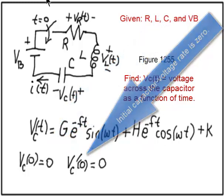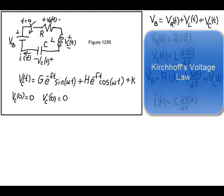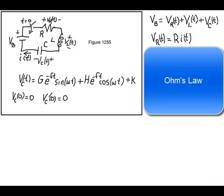Here's Kirchhoff's voltage law, which says the voltage across the battery is the sum of the voltages across all three components. This is Ohm's law. The voltage across the resistor is the resistance times the current through the resistor.